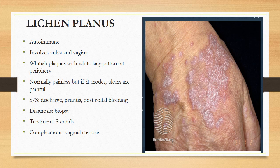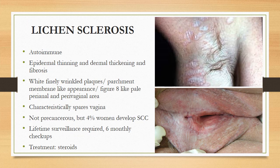We can simply treat lichen planus with steroids. If it is left untreated, it can cause vaginal stenosis, which will ultimately lead to post-coital problems.